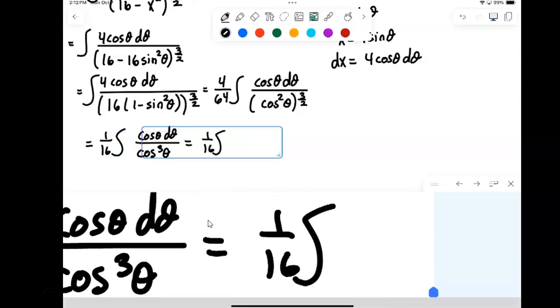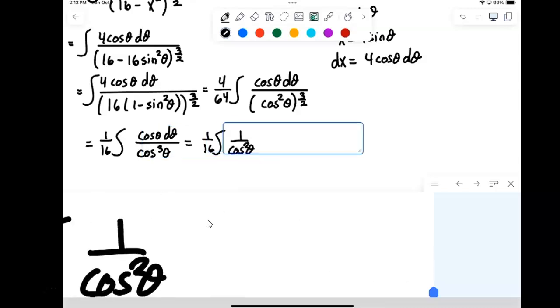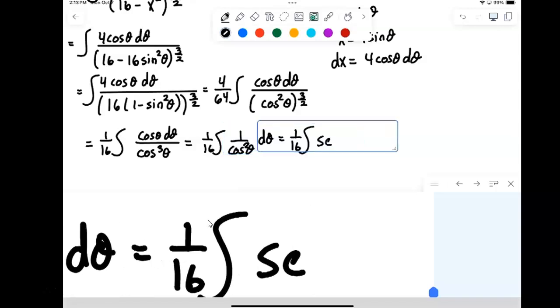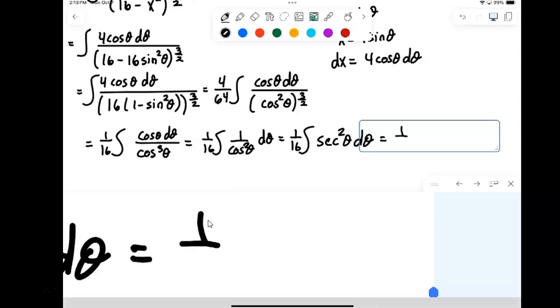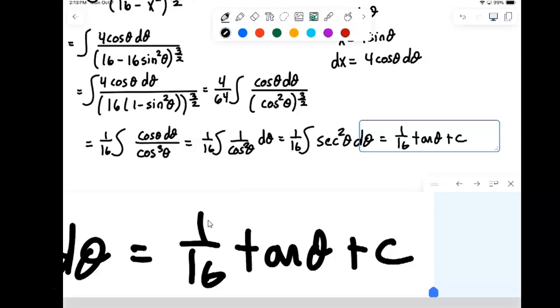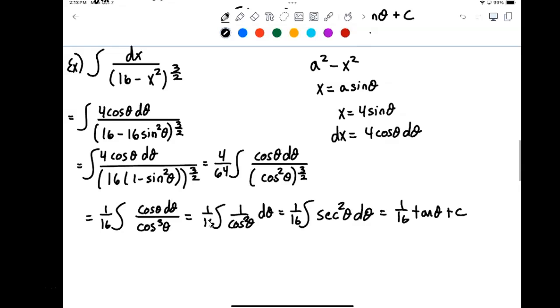So, 1 sixteenth integral of 1 over cosine squared. But remember that 1 over cosine squared is just secant squared. But remember the integral of secant squared is just tangent. Okay, but that answer is in terms of theta and we need to convert it back over to x. Okay, so we've done the first kind of, if you will, two-thirds of the problem.